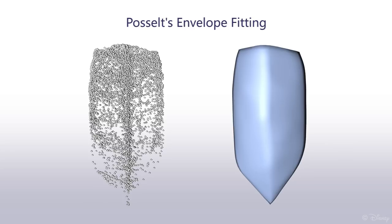This shape is well known in the dentistry community as Posselt's Envelope of Motion. We parameterize this shape and learn a mapping from any 3D position inside to a full 6 degree of freedom jaw pose. This is the basic design of our new rig.